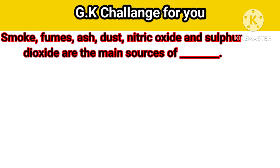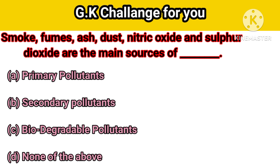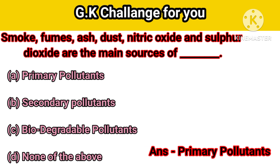Next question: Smoke, fumes, ash, dust, nitric oxide, and sulphur dioxide are the main sources of — Option A: Primary pollutants, B: Secondary pollutants, C: Biodegradable pollutants, D: None of the above. Your right answer is primary pollutants.